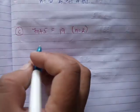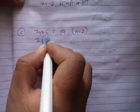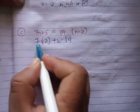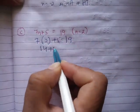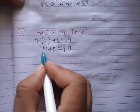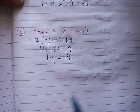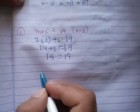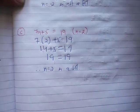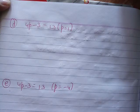For part C: 7n plus 5 equal to 19. Put n equal to 2: 7 times 2 equal to 14, plus 5 equal to 19. That gives 14 plus 5 equal to 19, and 19 equal to 19. Left side equals right side, therefore n equal to 2 is a solution of the given equation.